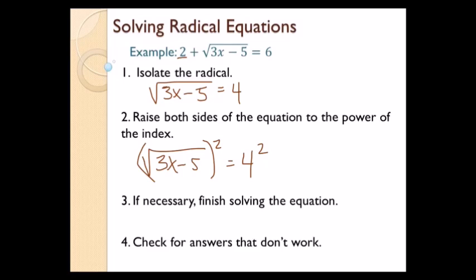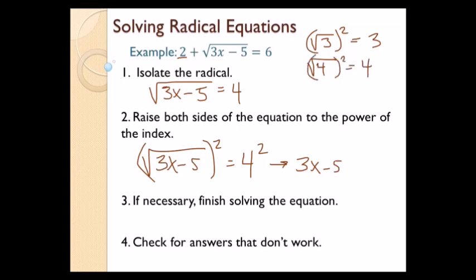So when I square both sides, squaring the square root just gets rid of the radical. So that's going to end up giving me 3x minus 5. Think about it this way: if I have the square root of 3 squared, square root of 3 times square root of 3 is 3. Square root of 4 squared — square root of 4 times square root of 4 is 4. So 3x minus 5 equals — and don't forget to square this side. That's important. It's a common mistake to square the left-hand side and forget the right-hand side. So that's 16.